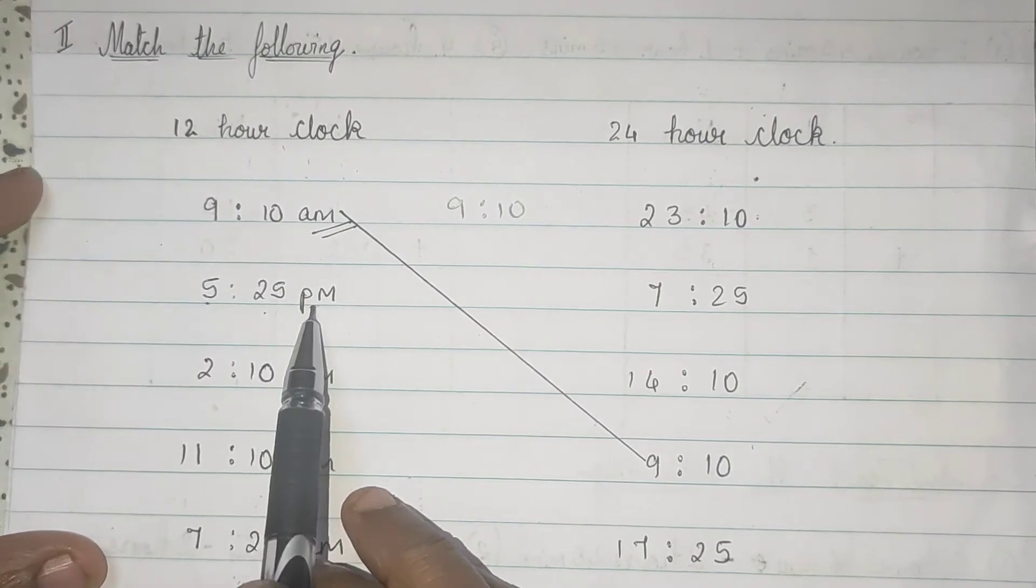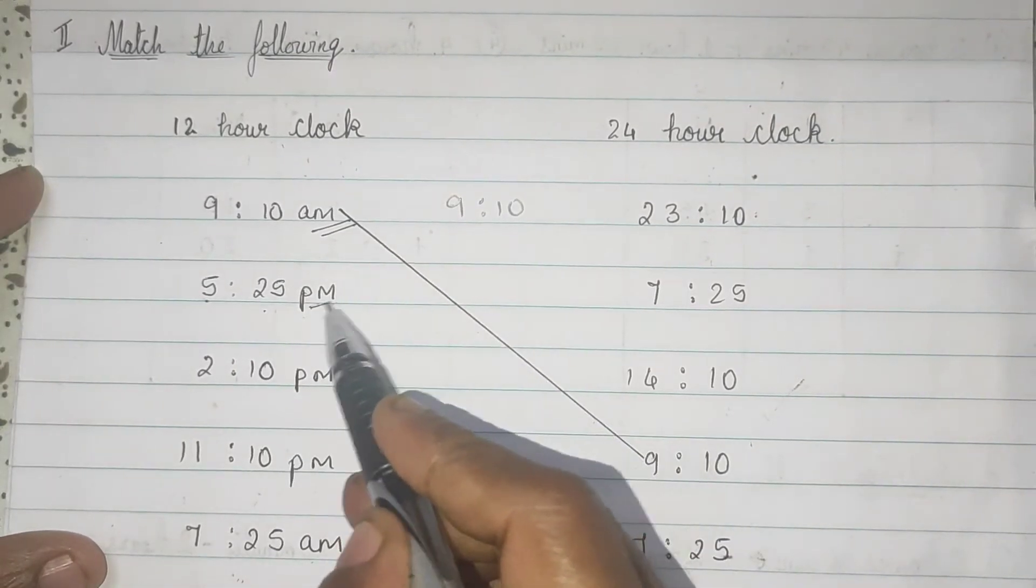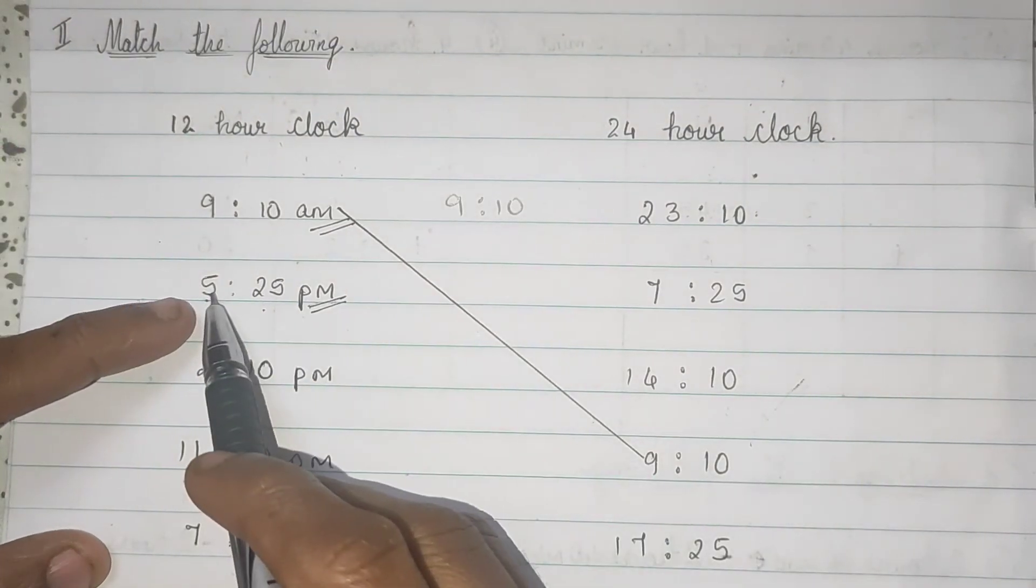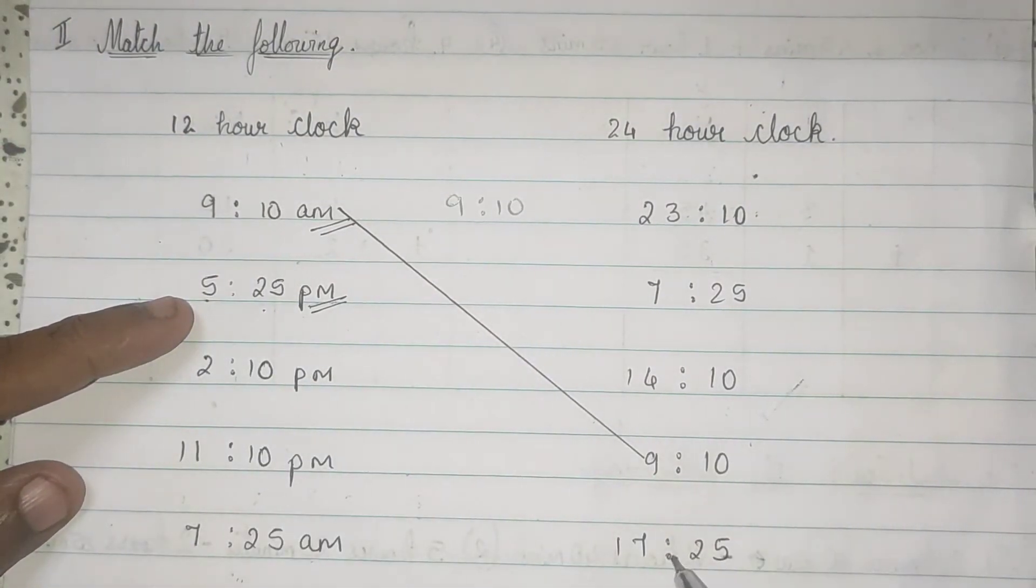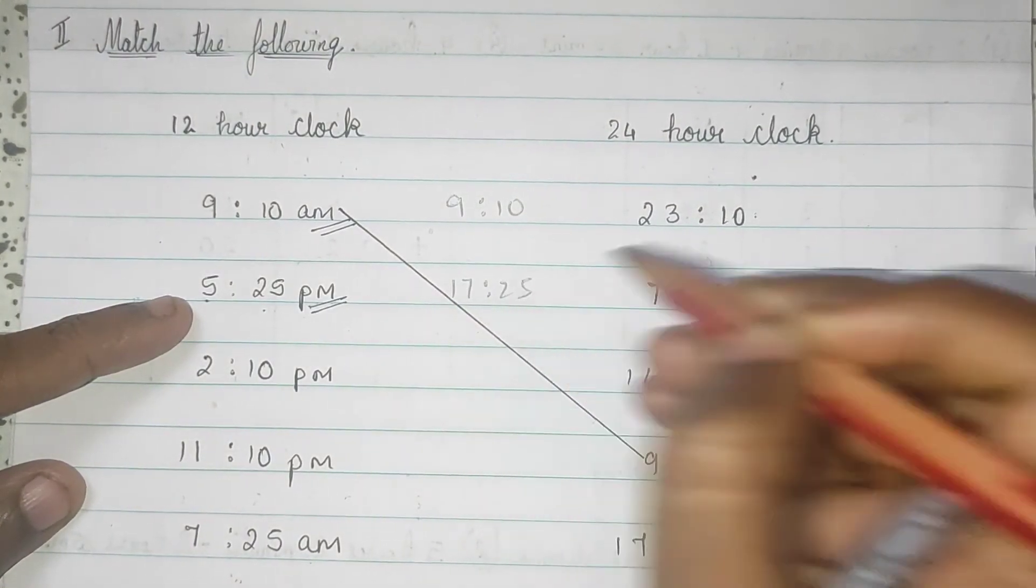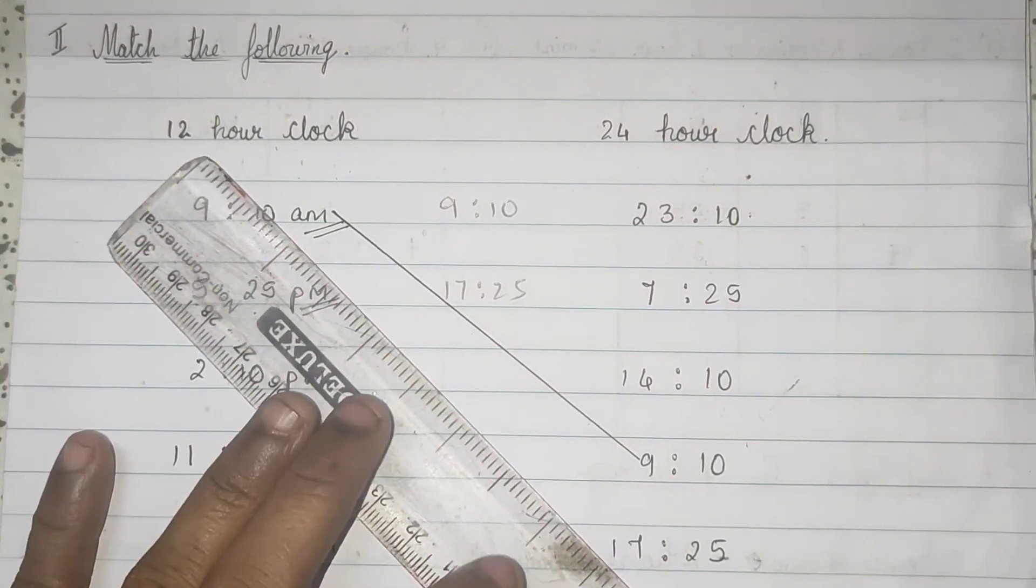Now, 5, 25 p.m. P.m means evening. So, 5. So, 12 plus 5 is 17. So, see here. 17. So, either you write here 17:25 or do match.